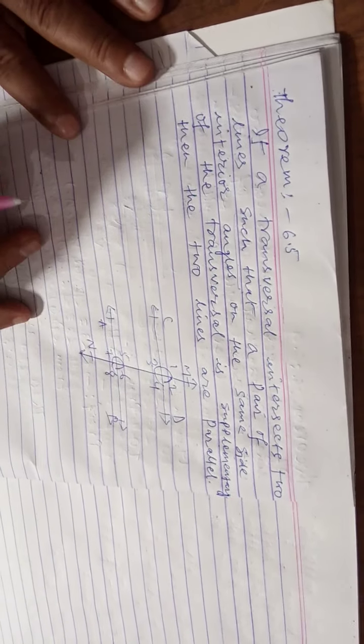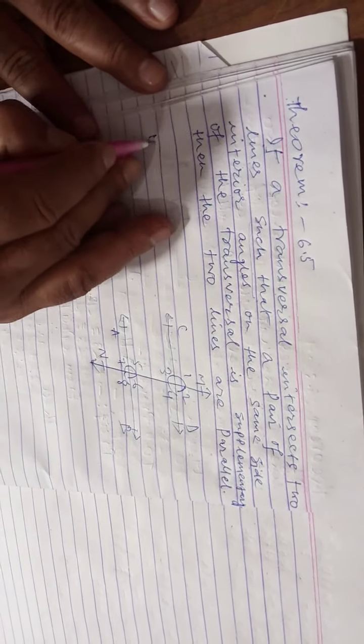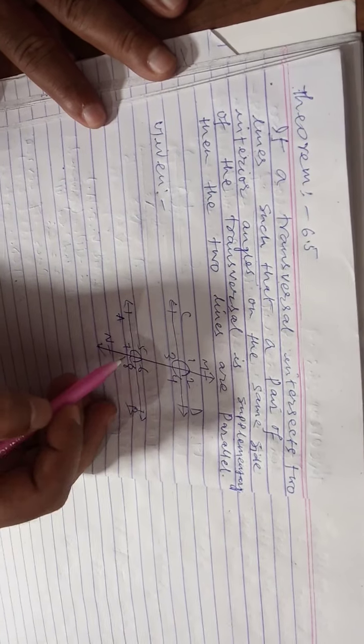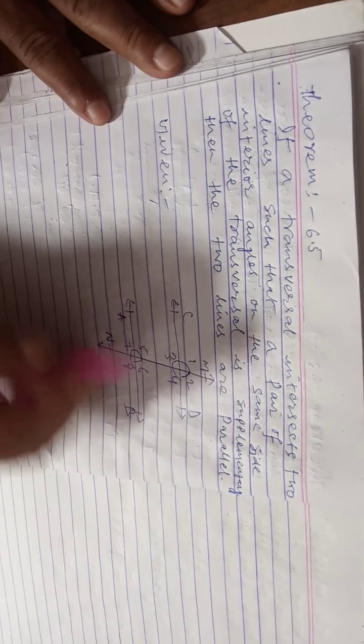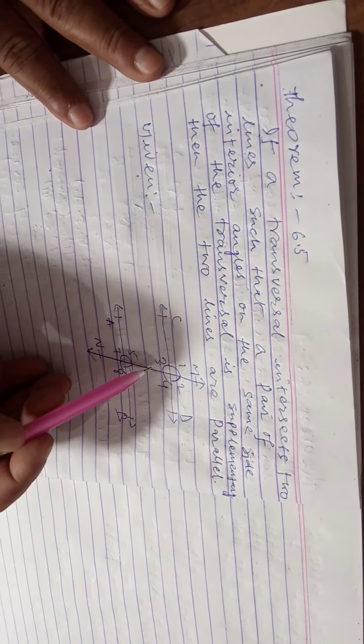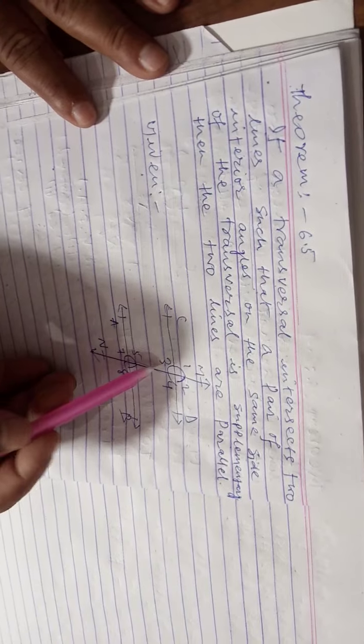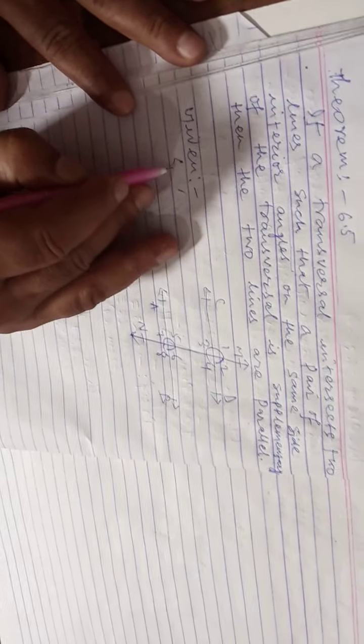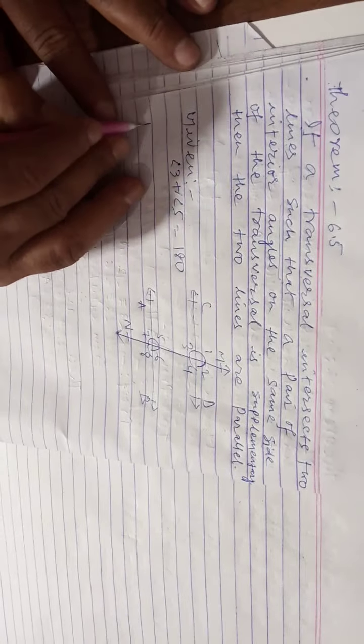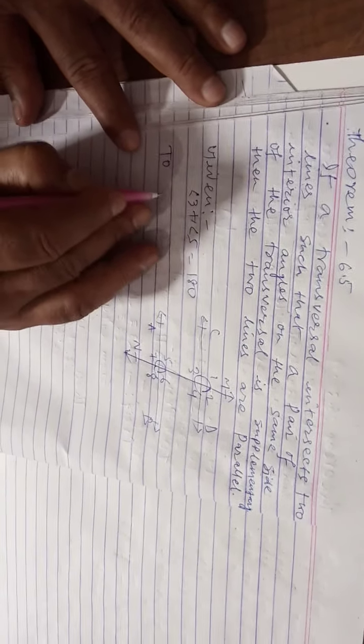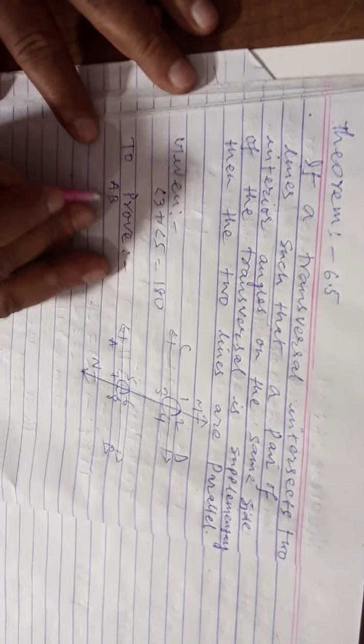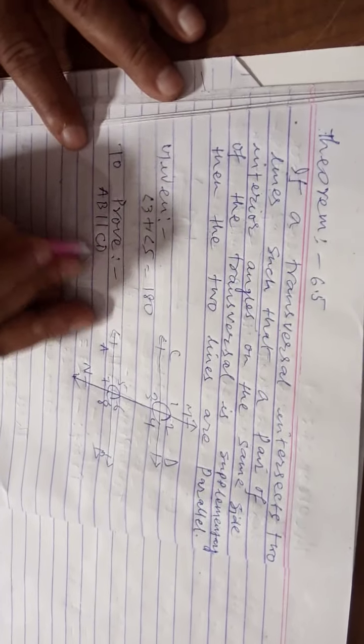So to prove, given what is transversal same side interior angles. Angle 3, angle 5, sum 180. Prove AB, CD, two lines parallel. CD.